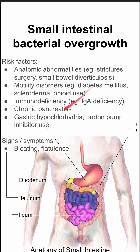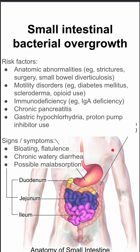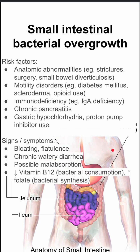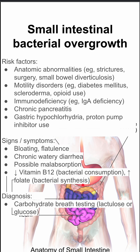Signs and symptoms: patients can have bloating and flatulence, chronic watery diarrhea, possible malabsorption, and decreased vitamin B12 levels as well as high folate levels. This is because vitamin B12 is consumed by the bacteria, so they'll have low levels in the blood, and folate is produced by the bacteria, so they'll have high levels of that in the blood.